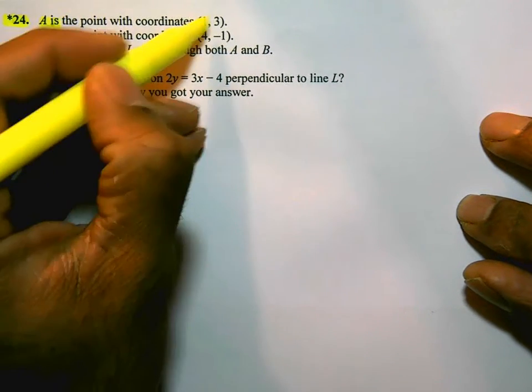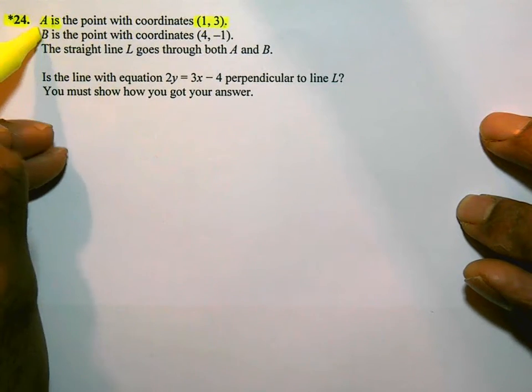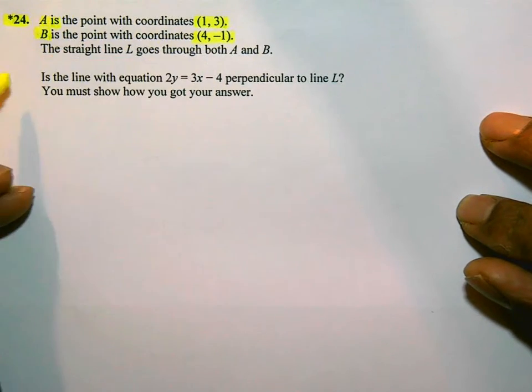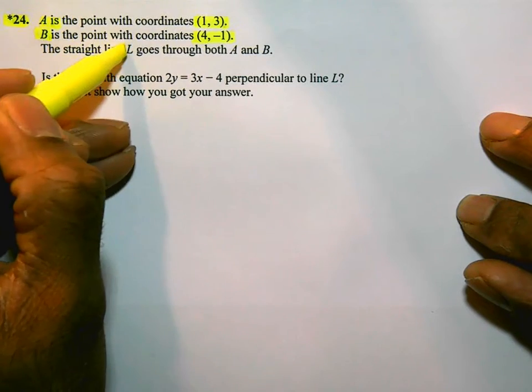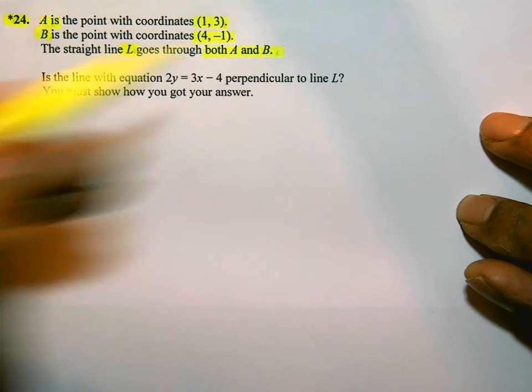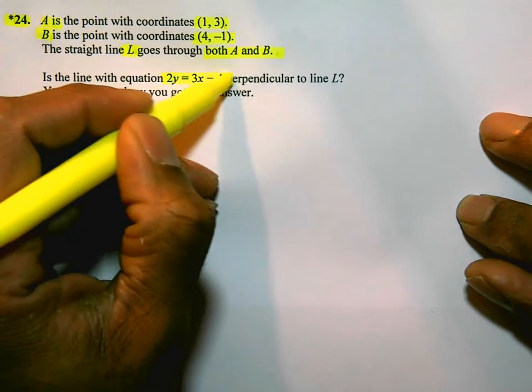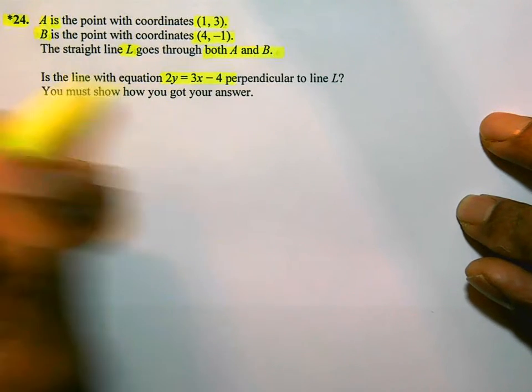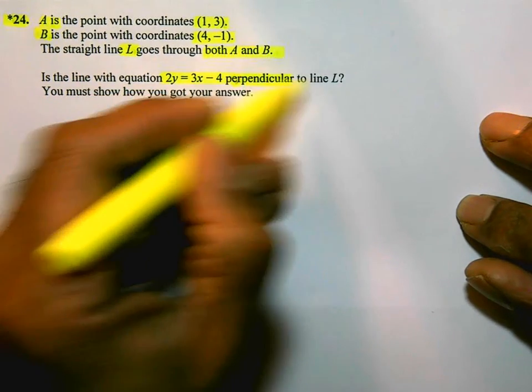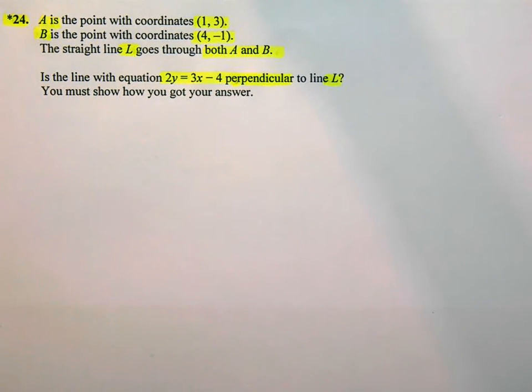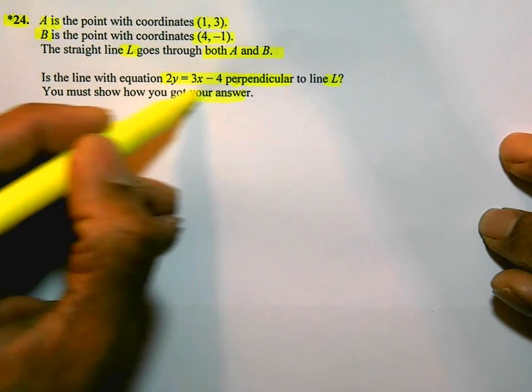It says A is the point with coordinates (1, 3), B is the point with coordinates (4, -1). The straight line L goes through both A and B. Is the line with equation 2y = 3x - 4 perpendicular to line L? You must show how you got your answer.